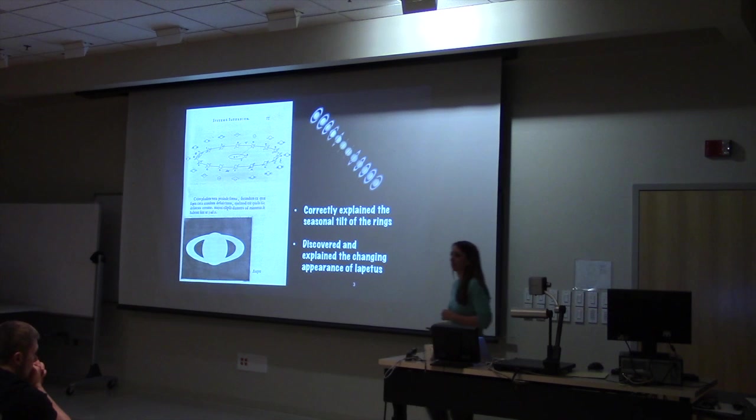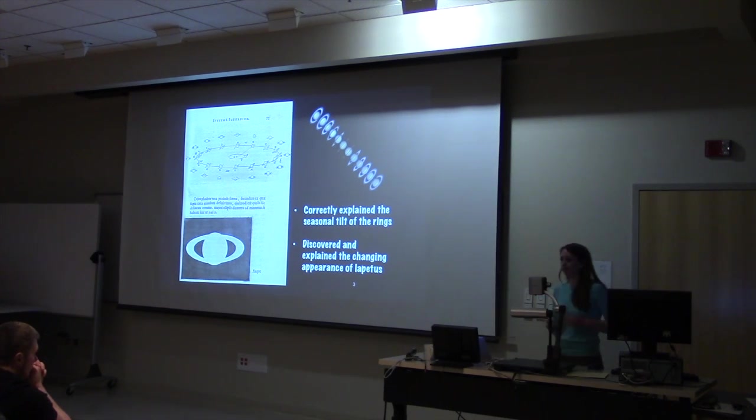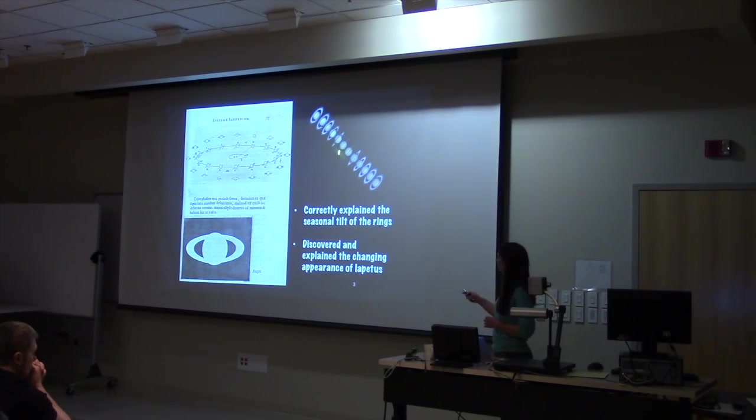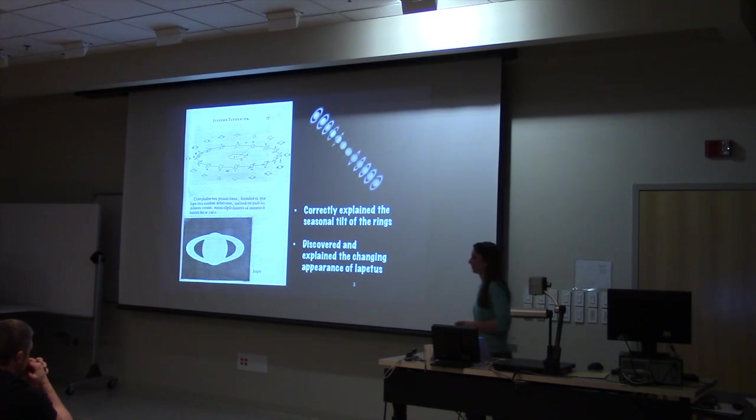Sometimes they look like they're tilted up, sometimes they look like they're tilted down, and sometimes you're looking straight on at them and they're very hard to see. Giovanni Cassini correctly interpreted that change in the appearance of the rings as Saturn orbiting around the Sun in its tilted ring structure.